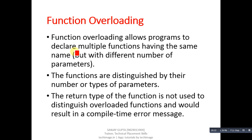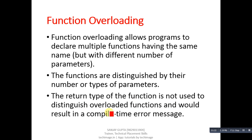Function overloading allows programs to declare multiple functions having the same name but with a different number of parameters. The functions are distinguished by their number or type of parameters. In short, we can define more than one function having the same name, but the compiler will distinguish them according to their number of arguments or type of arguments. You have to remember that the return type of the function is not used to distinguish overloaded functions.